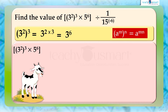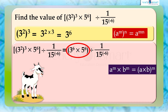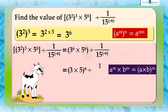So, 3 squared the whole cube multiplied by 5 raised to 6, divided by 1 by 15 raised to minus 6, equals 3 raised to 6 multiplied by 5 raised to 6, divided by 1 by 15 raised to minus 6. Using the law a raised to m multiplied by b raised to m equals (a multiplied by b) the whole raised to m, we get (3 multiplied by 5) the whole raised to 6, divided by 1 by 15 raised to minus 6, which equals 15 raised to 6 divided by 1 by 15 raised to minus 6.